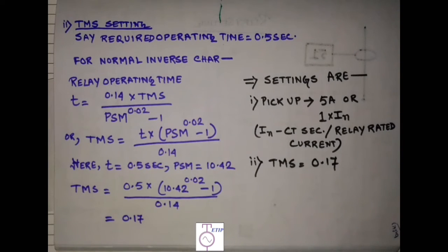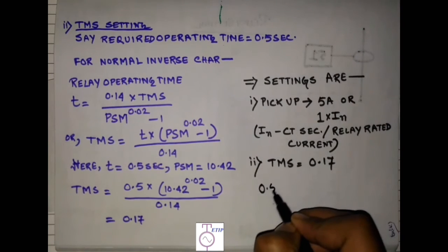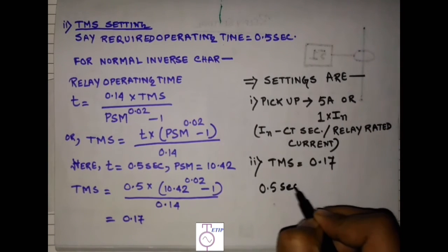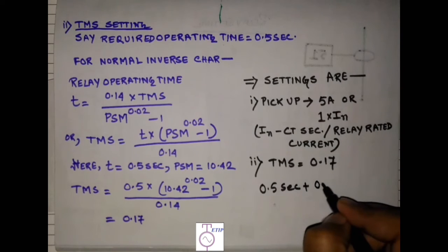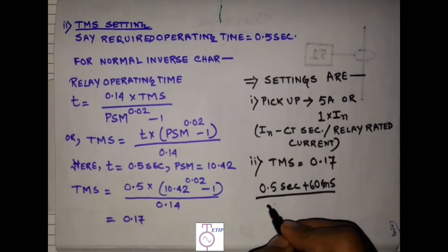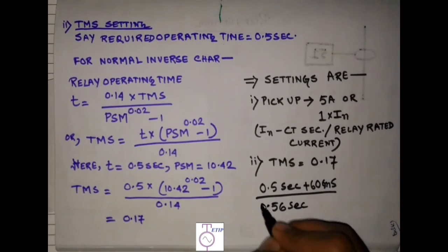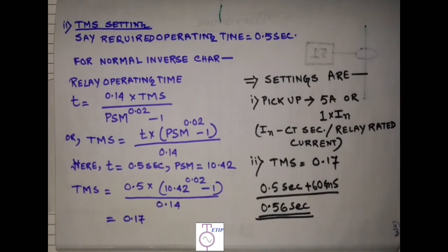And what will be the breaker operating time? Since we have set the relay at 0.5 second plus breaker operating time 60 millisecond will be added. So total operating time will be 0.56 second. Within this time the relay will clear the fault.